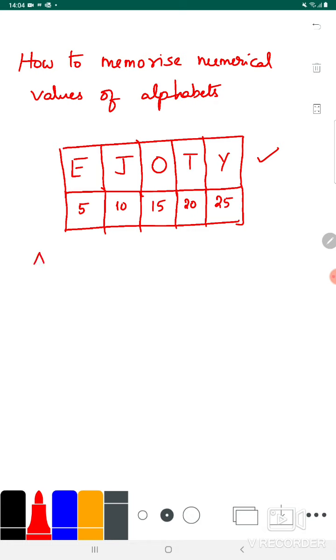We already know A, B, C, and D. A is 1, B is 2, C is 3, D is 4, and E is 5.